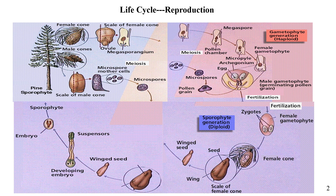Remember, students, when you are holding pine needles in your hand, you are holding a sporophyte part. Pines have a specialized reproductive structure in which meiosis occurs. The pine tree is the sporophyte generation — if you look at the upper left of this picture, you can see it bearing both male and female cones.